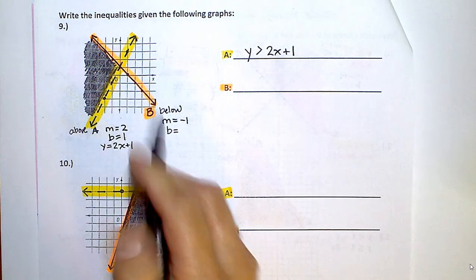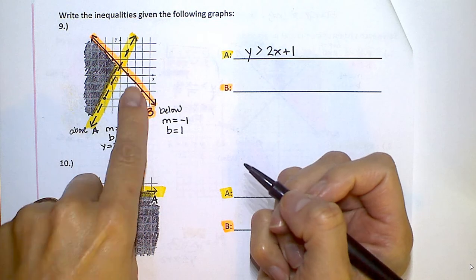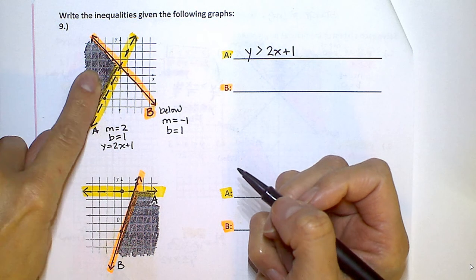B is also at 1. That's where those two lines are crossing. And I'm shading below. So the shaded part is below the line.